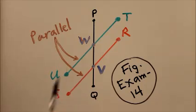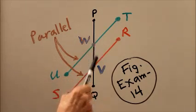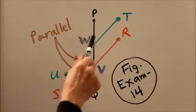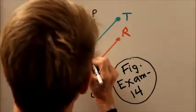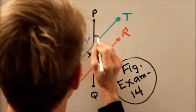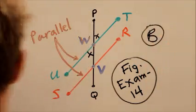TWP and UWQ. TWP, UWQ. Yup. That's a pair of vertical angles right here. So the answer is B.